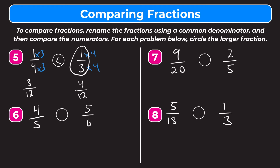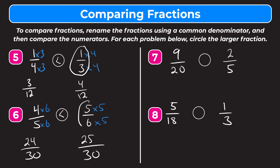Let's try number six. We have four-fifths and five-sixths. The common denominator here is going to be 30. To rename four-fifths, we multiply the numerator and denominator by six, giving us four times six is 24 over five times six is 30. For five-sixths, we multiply the numerator and denominator by five, giving us five times five is 25 over 30. So 25-thirtieths is greater than 24-thirtieths, which means four-fifths is less than five-sixths. Write our symbol and circle five-sixths.